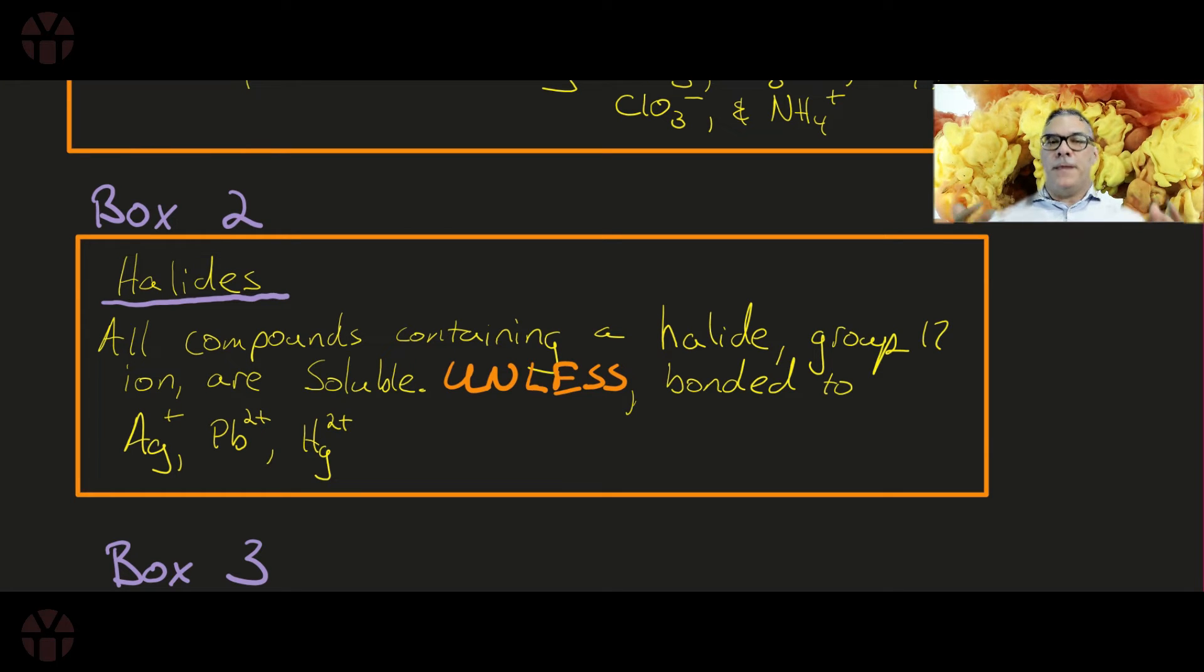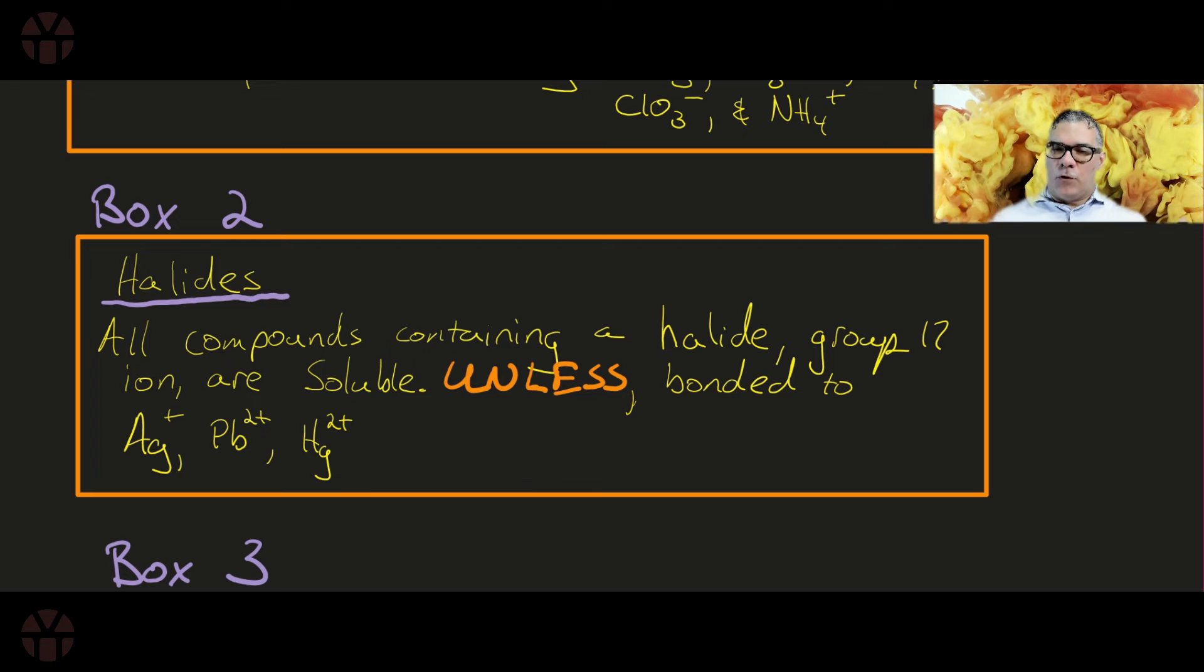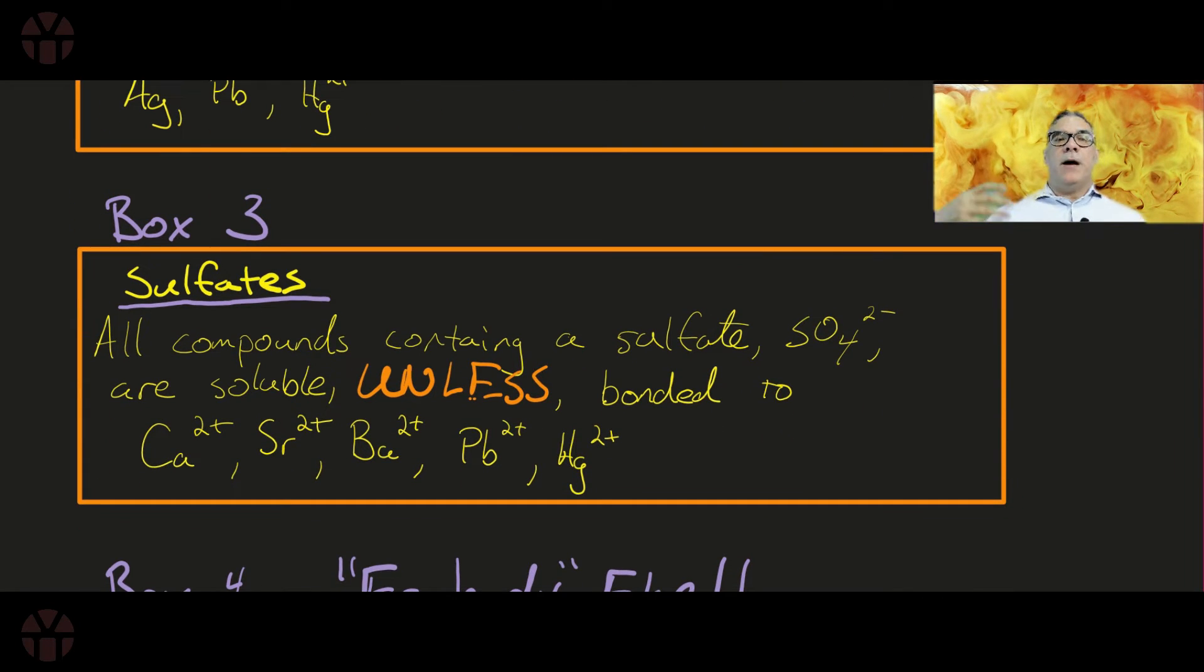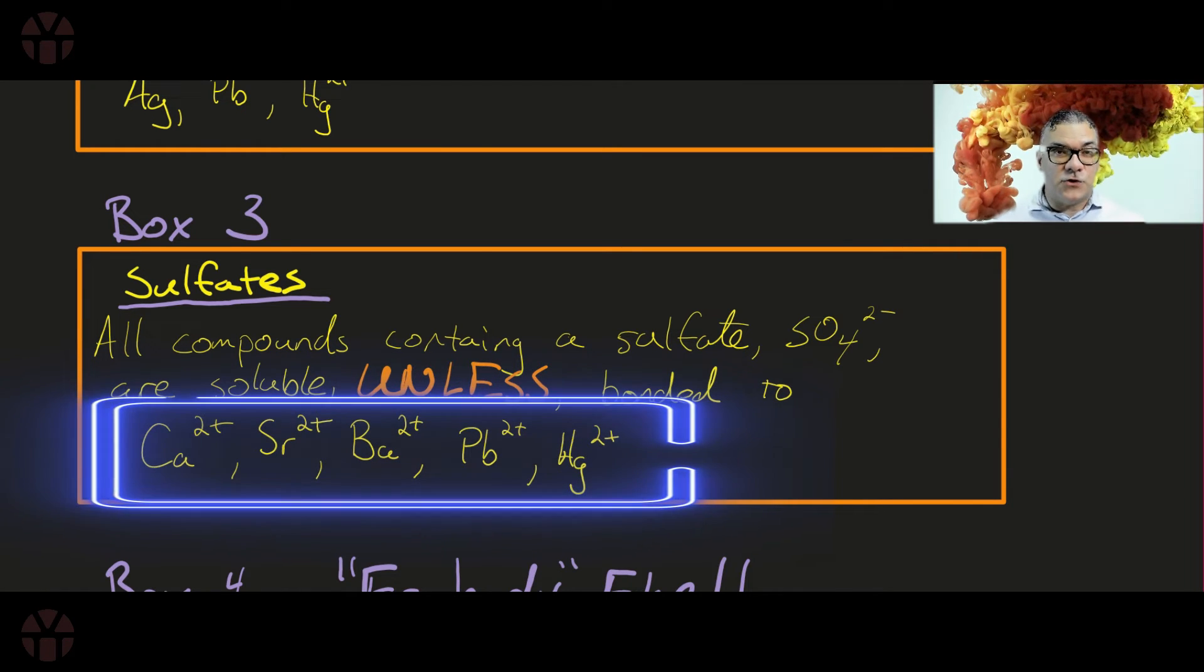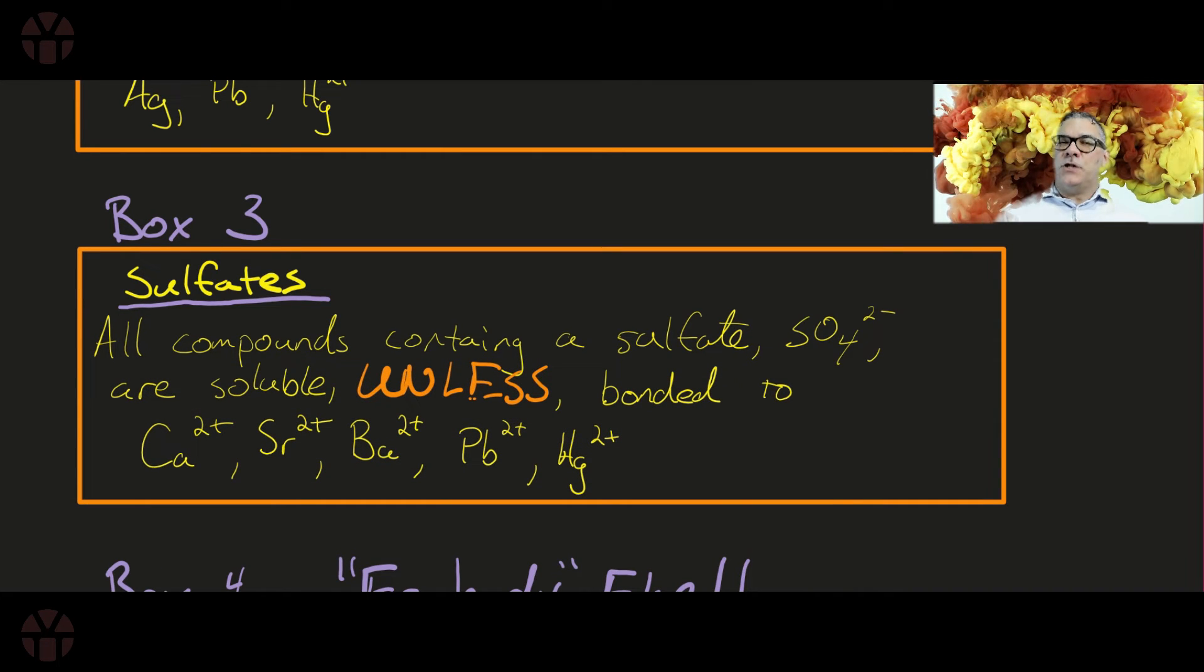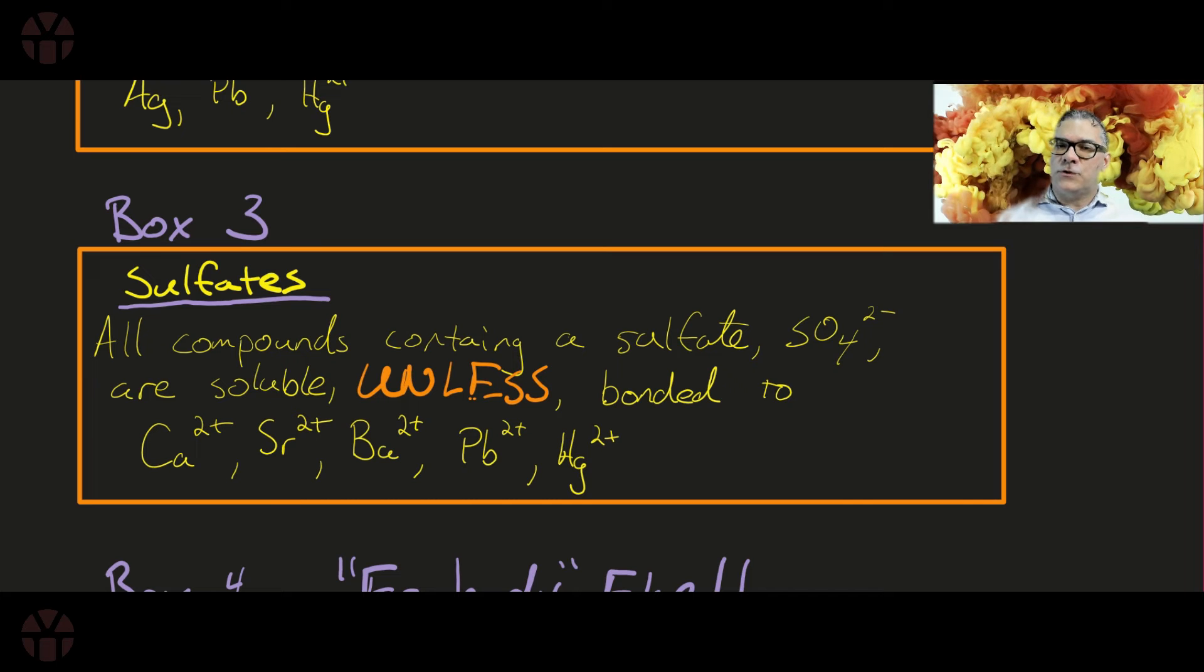After Box 2, we're now going to roll right to Box 3, and Box 3 are going to be my sulfates, my SO4 2- compounds. So all sulfates are soluble unless bonded to - and notice you got the fat bastard showing up again - so lead and mercury, and then the best suggestion I have here is look at a periodic table so you can see where they're at.